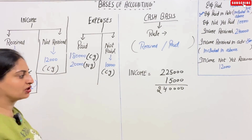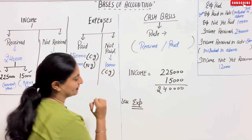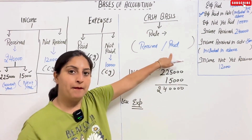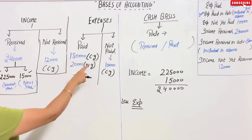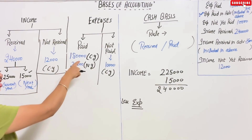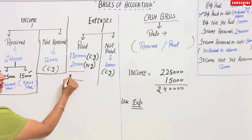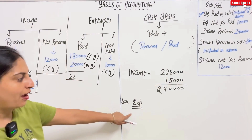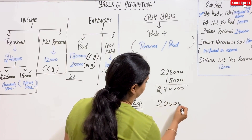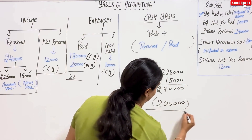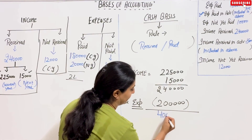Less expenses: we take the paid column — one lakh eighty thousand plus twenty thousand equals two lakh. So cash basis income is two lakh forty thousand minus two lakh, giving net income of forty thousand.